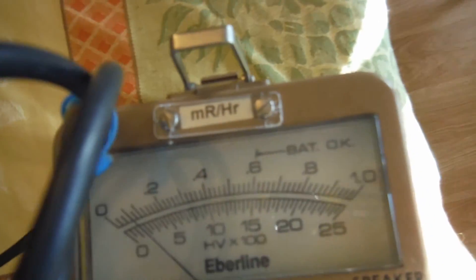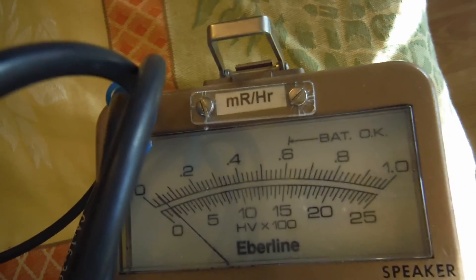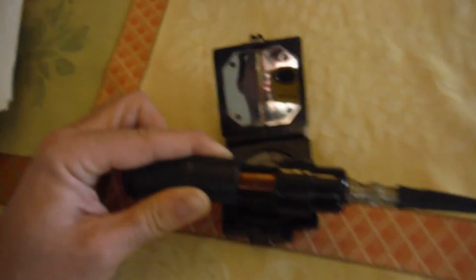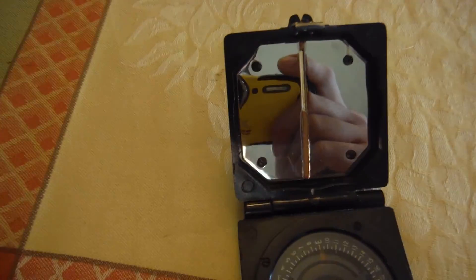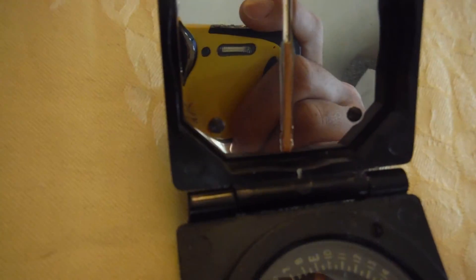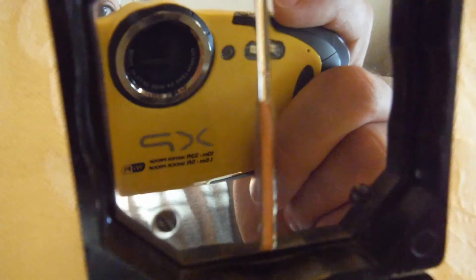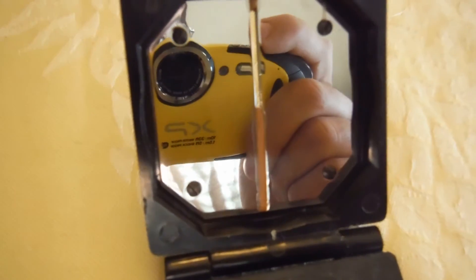Yeah, the dial isn't even going over 10. It's all in that exposed paint right out there in the mirror. That's the most dangerous part of that compass right there. Big old glop of radium right there, straight up.